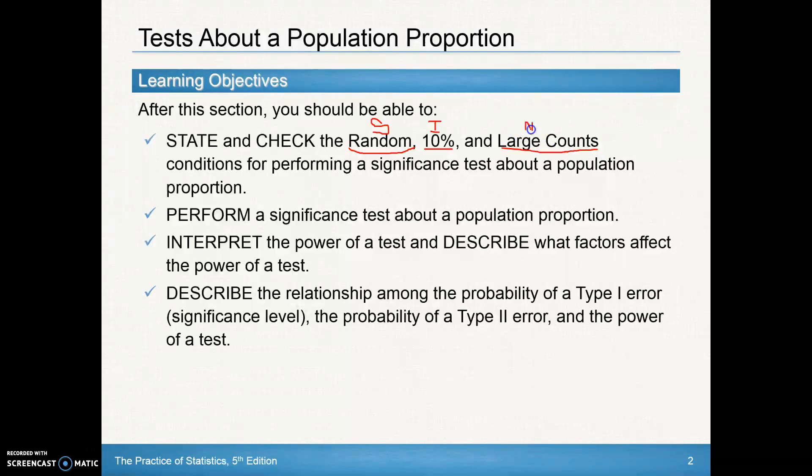And when we're checking for normality with proportions we always remember that it's the n times p has to be greater than or equal to 10, and the n times q has to be greater than or equal to 10.